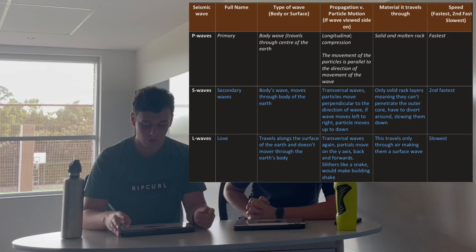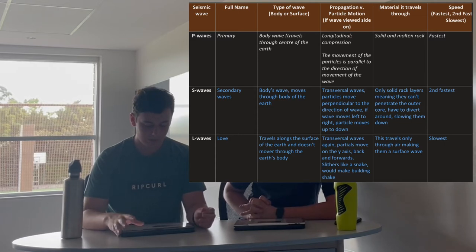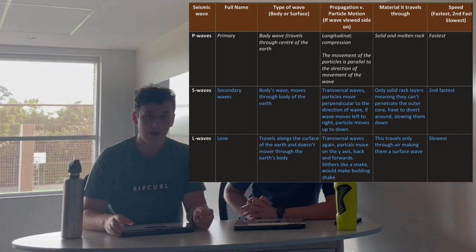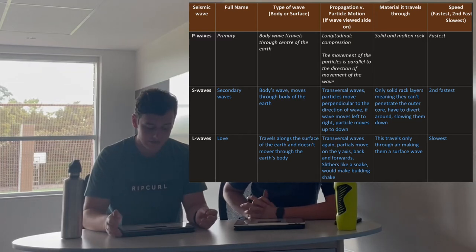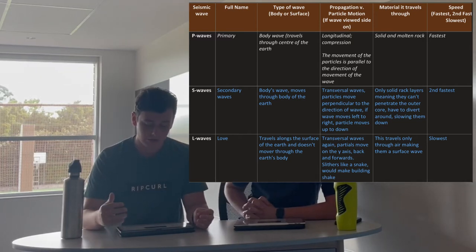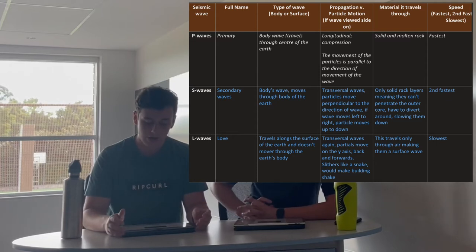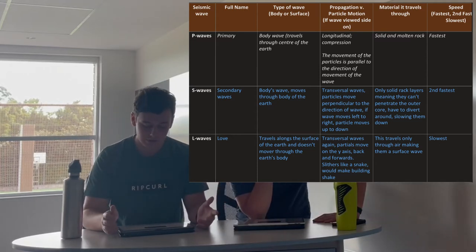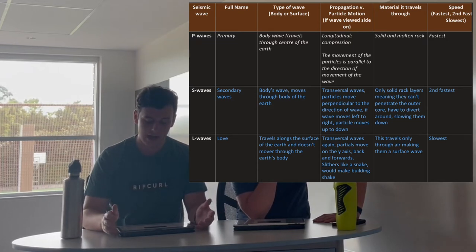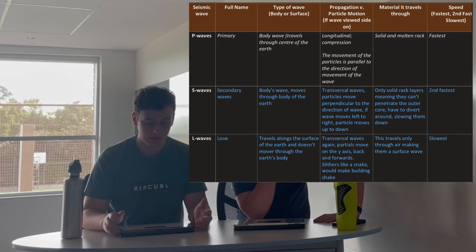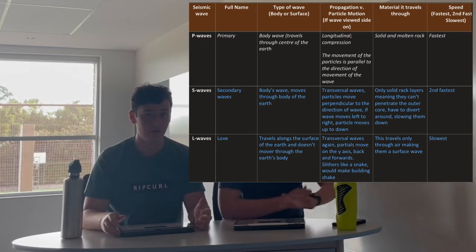Finally, we have L waves, known as love waves or surface waves. These travel along the surface of the Earth and don't move through the Earth's body. They are also transversal waves and are only able to travel through solid surface material, making them the slowest wave type — which actually makes them the most destructive.